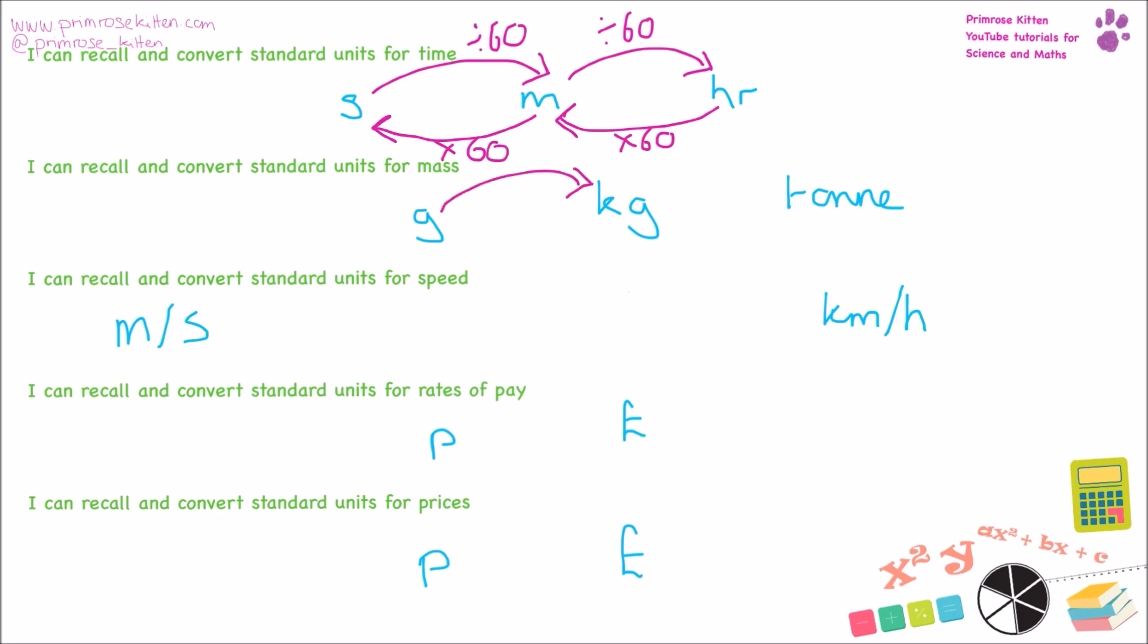Grams into kilograms, you need to divide by a thousand. Kilograms into tons, divide by a thousand. Tons into kilograms, times by a thousand. Kilograms into grams, times by a thousand.